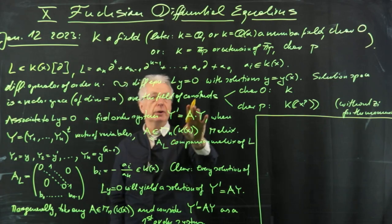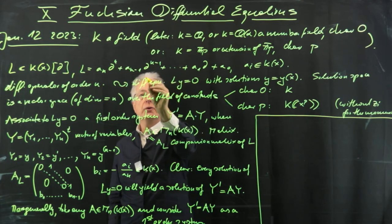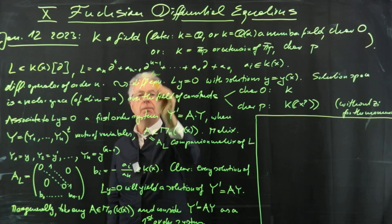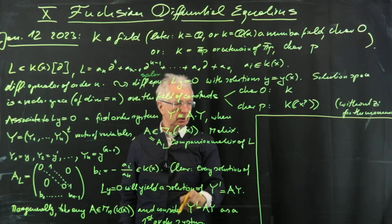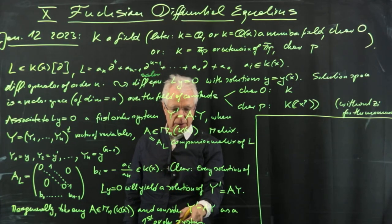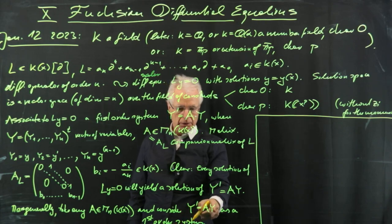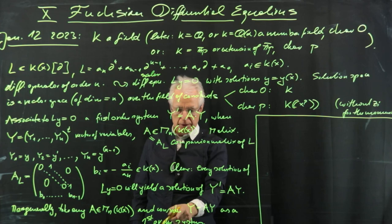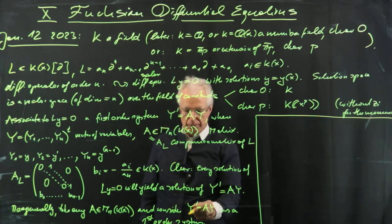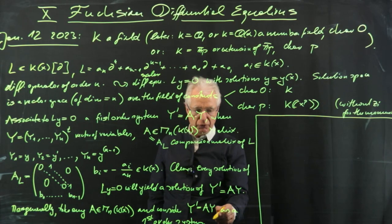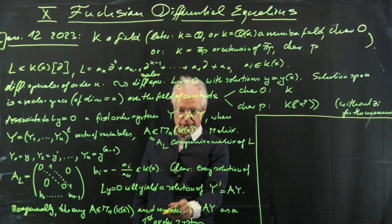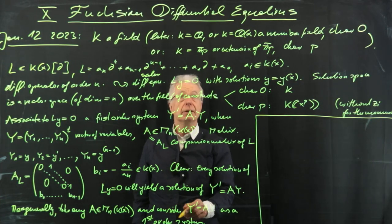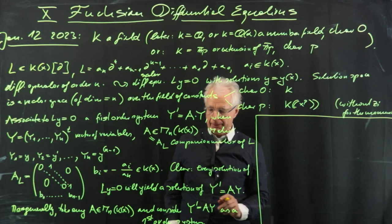We can write ∂ − A acting on vectors of power series or Laurent series of dimension n. Call this Γ. This map is linear and it is called a connection on the k[x]-module k[x]^n.